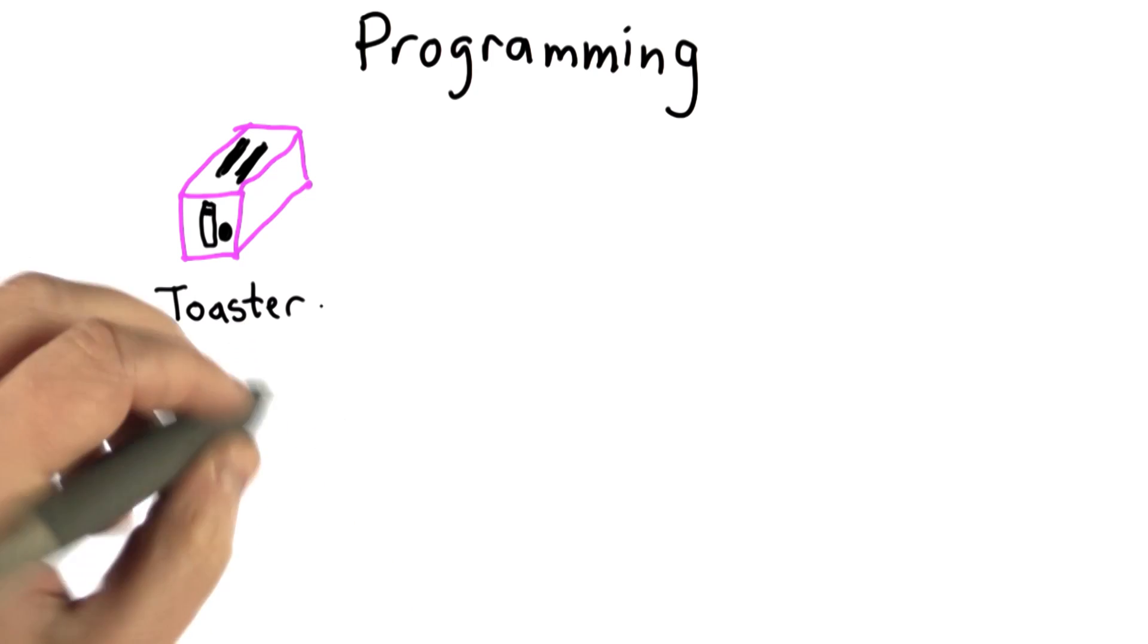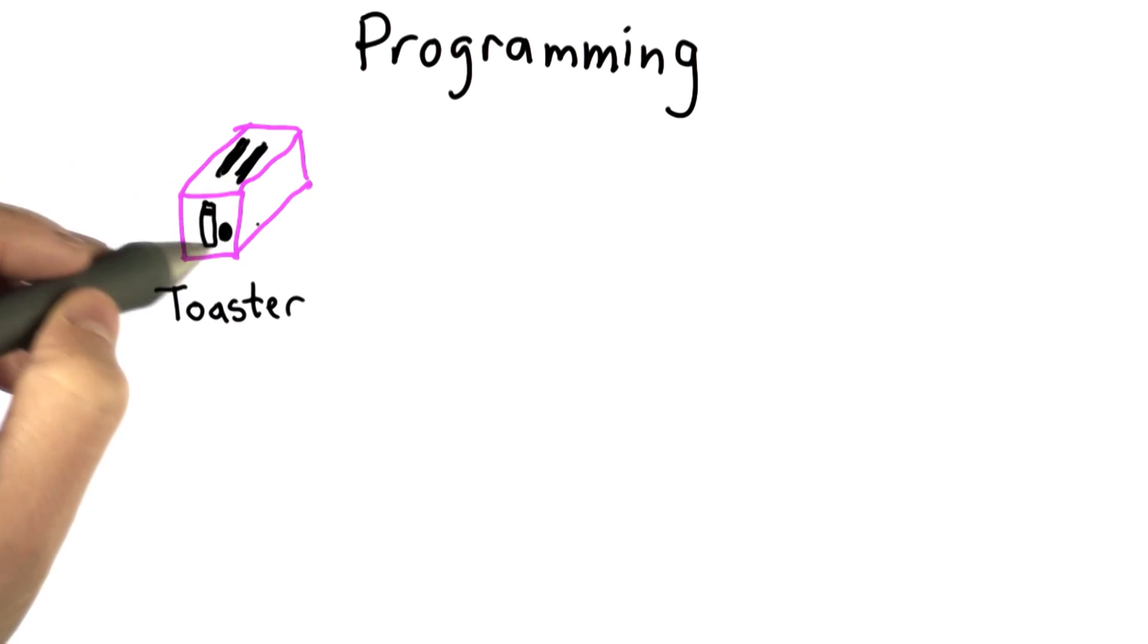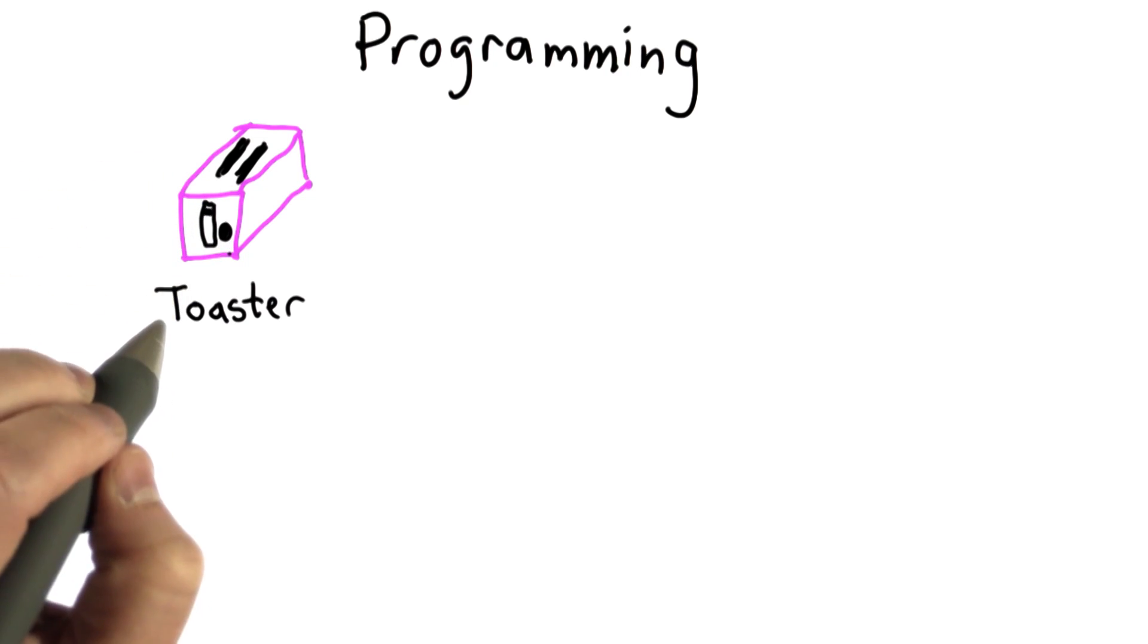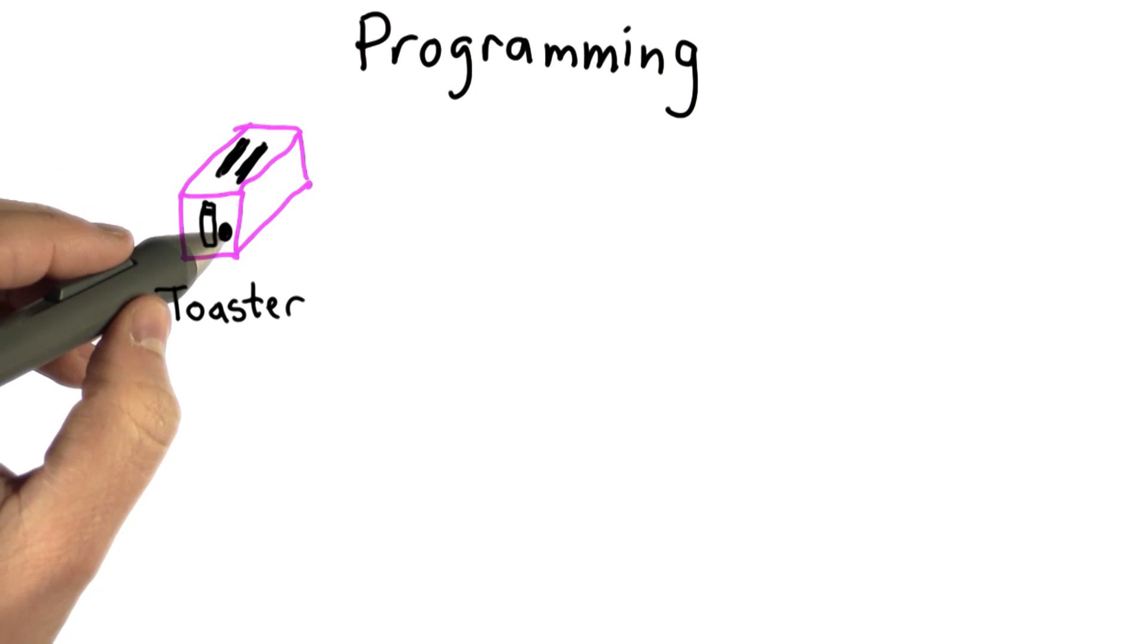A toaster can do more than one thing, maybe. We can put different things in it - toast bread, toast muffins. It has some settings we can use to change its behavior a little bit, turning a dial to make it toast for longer or shorter.